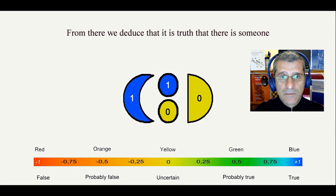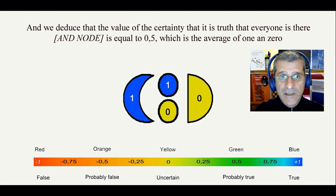And we deduce that the value of the certainty that it is true that everyone is there, the AND node, is equal to 0.5, which is the average of 1 and 0.